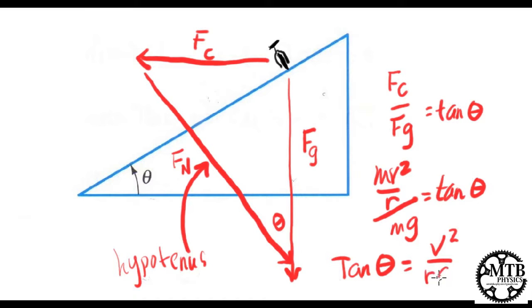Let's solve the problem. This is what we know from the story problem: our velocity is 25 miles per hour, the radius of the turn is 50 meters, we're assuming that there is zero friction, and we're looking for the angle of the banked turn or the berm.